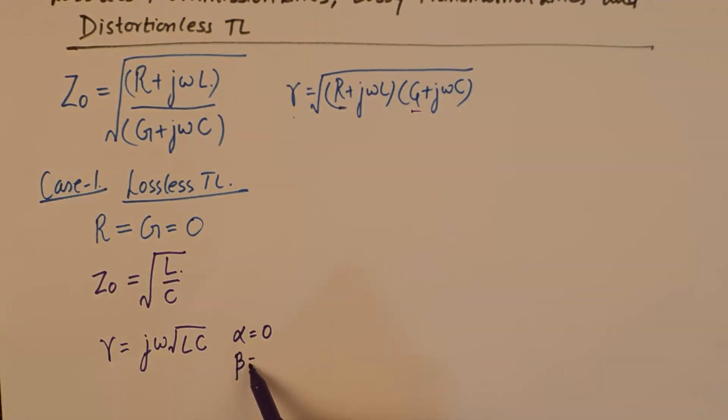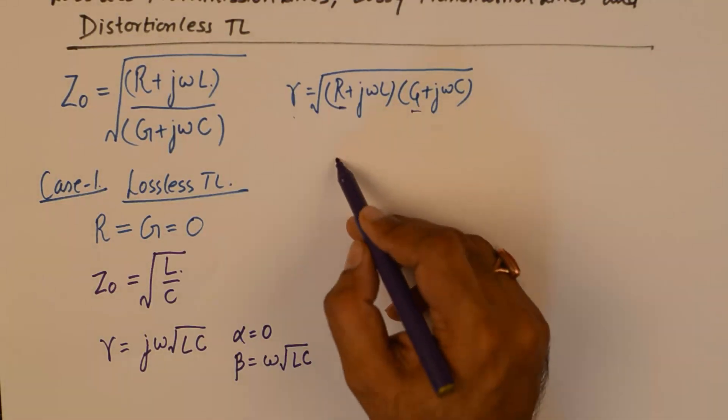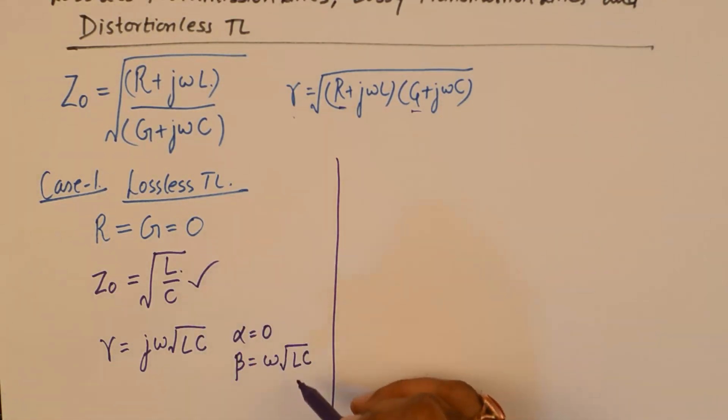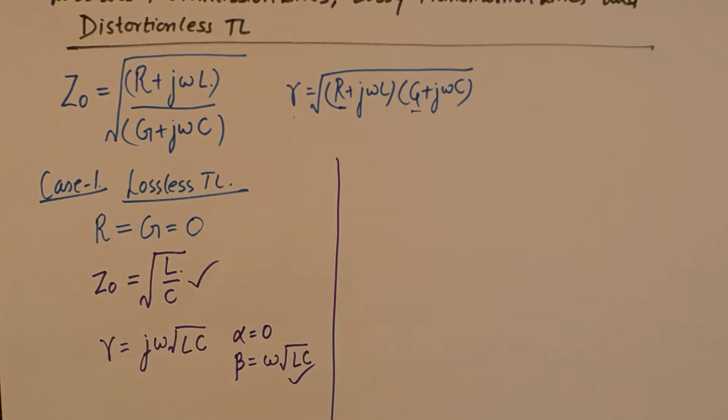We can say that α is zero – the attenuation constant is zero for lossless transmission line, there is no attenuation. What we are left with is β which becomes equal to ω√(LC). These two formulas are very important from the point of view of numericals.